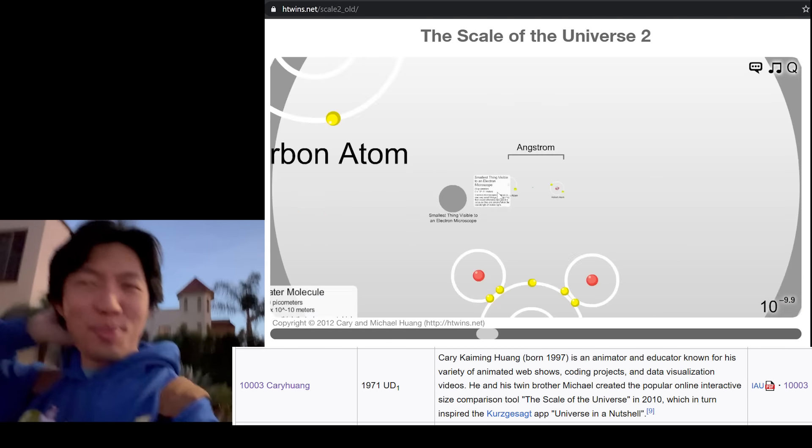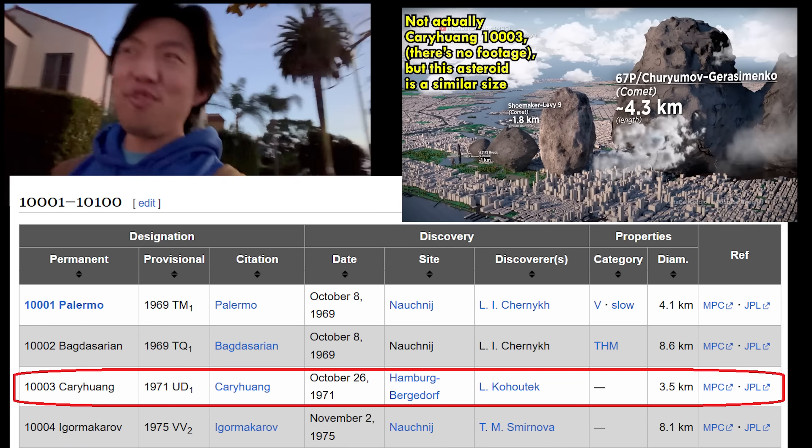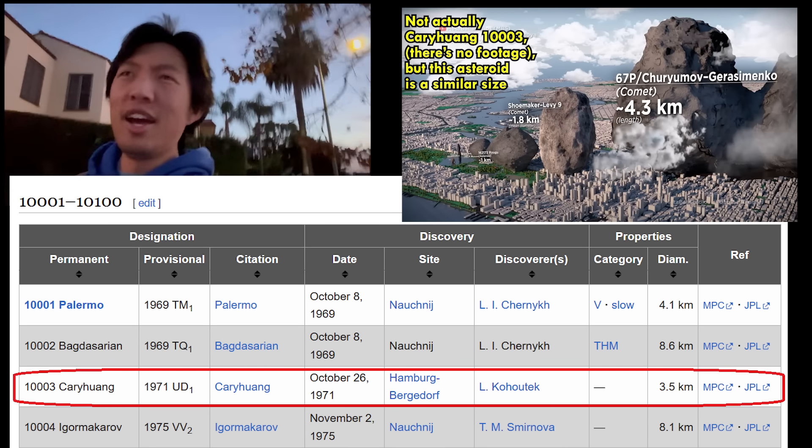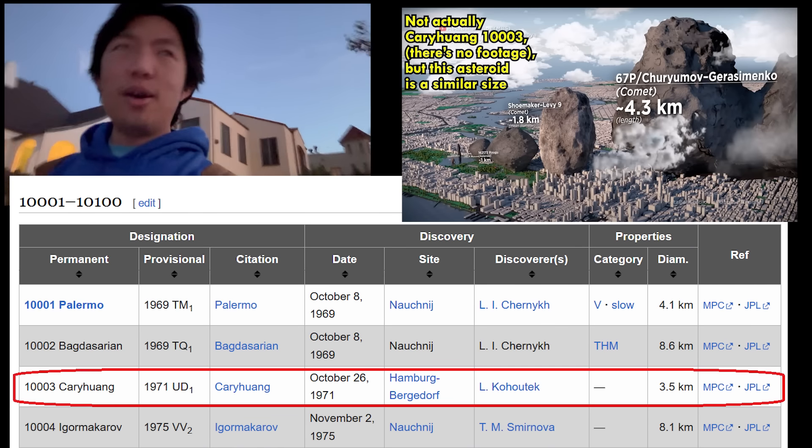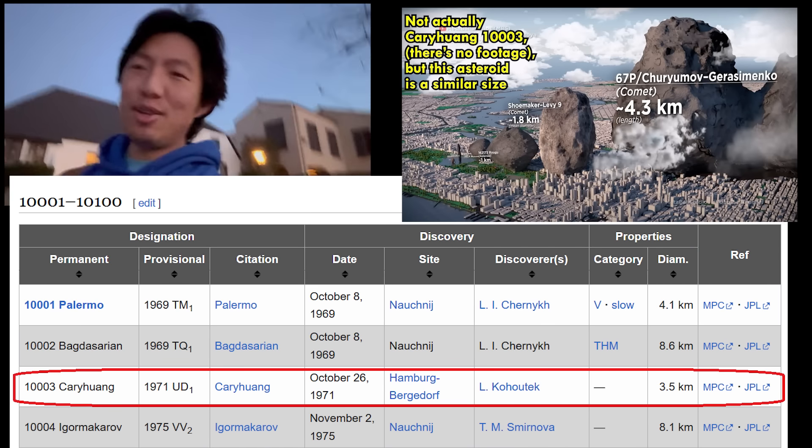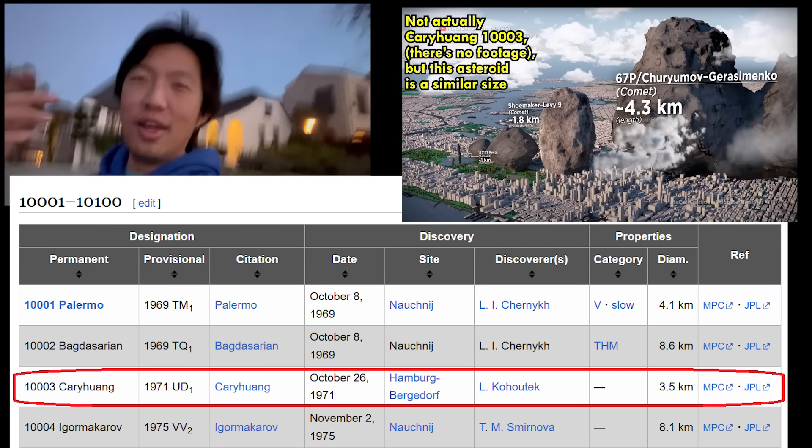When I go to the documentation, like the list of all the planets, it says Kari Huang, creator of Scale of the Universe. And so, you know, whoever chose that name, huge thank you. I'd love to meet you. But if you want to know some fun facts about this planet, it's 3.5 kilometers in diameter. So I think it's about like two miles or 2.5 miles, which is pretty cool.